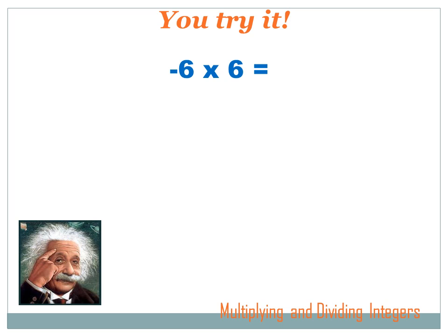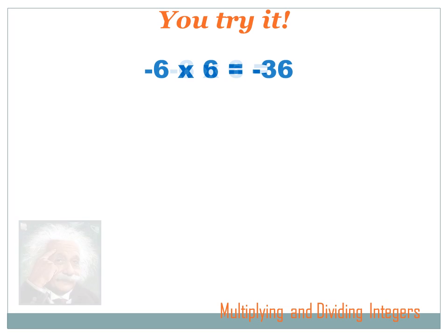Now you try it. -6 times 6. Hit the pause button, do the problem on a piece of paper, and then hit the forward button to see the answer. I've got a negative number times a positive number, so I've got one of each signs. My answer is going to be negative. 6 times 6 is 36, so -6 times 6 is -36.